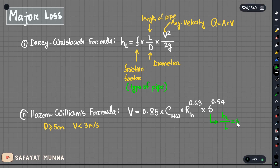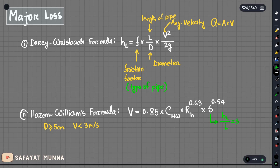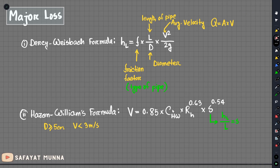In the Hazen-Williams formula, we have a slope component S, where slope is defined as the slope. We also have the hydraulic radius Rh. The formula ultimately gives us the head loss.